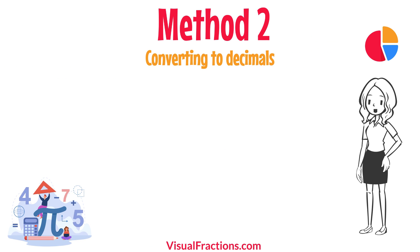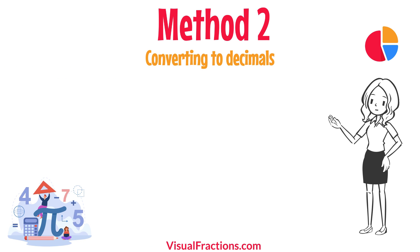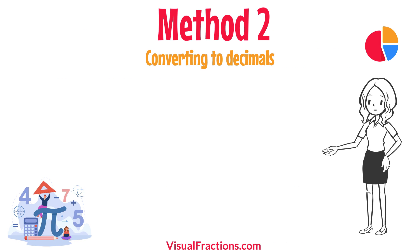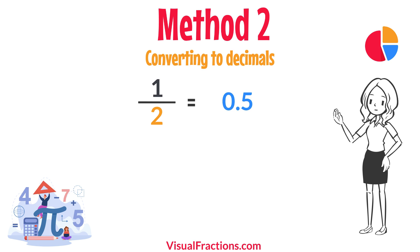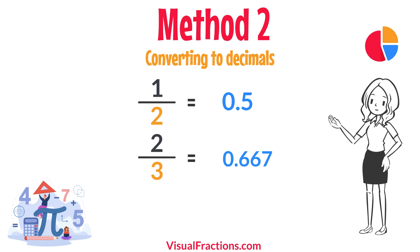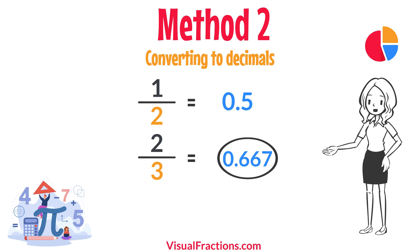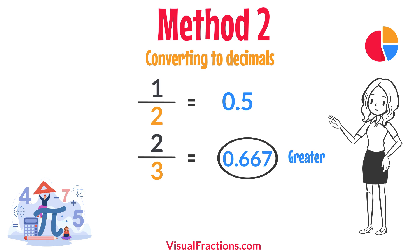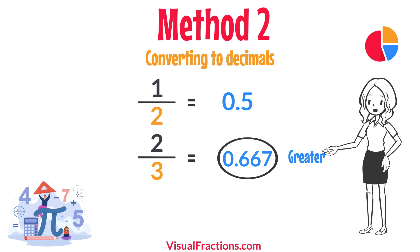For a second method, let's convert each fraction to a decimal. Using a calculator, divide one by two to get 0.5, and divide two by three to get approximately 0.667. This calculation shows that 0.667 is greater than 0.5, confirming that two thirds is indeed greater than one half.